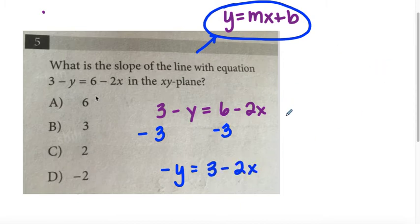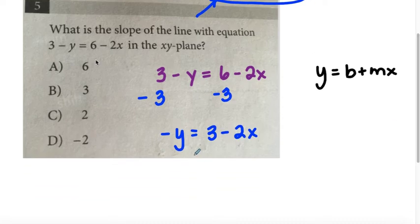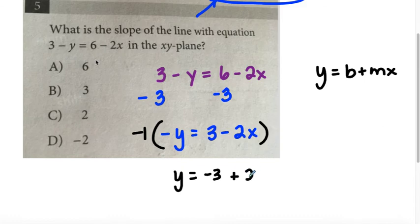Now, is this y equals mx plus b? No. I kind of put it in y equals b plus mx because of the form it was already in. So let's be careful here. Now, I've got negative y, and it can't be negative y. It has to be a positive y. So I'm going to multiply the entire equation by a negative 1, therefore changing the signs. So y equals negative 3 plus 2x.